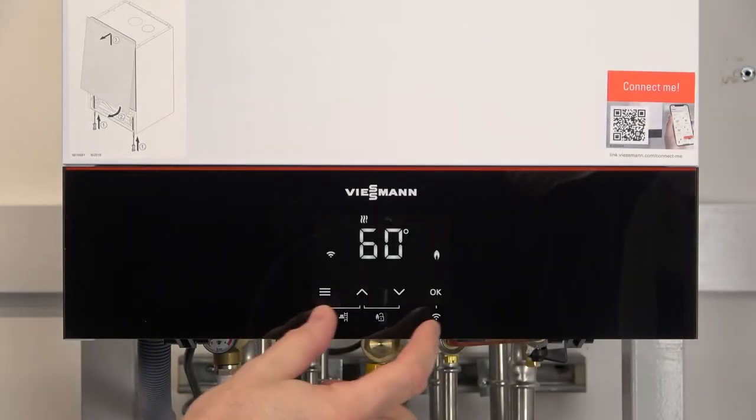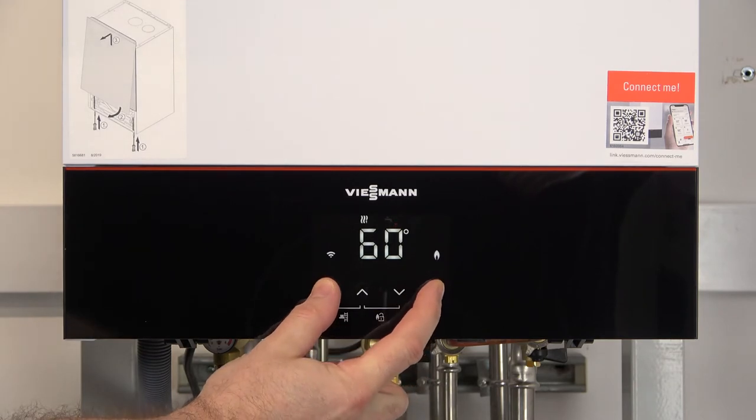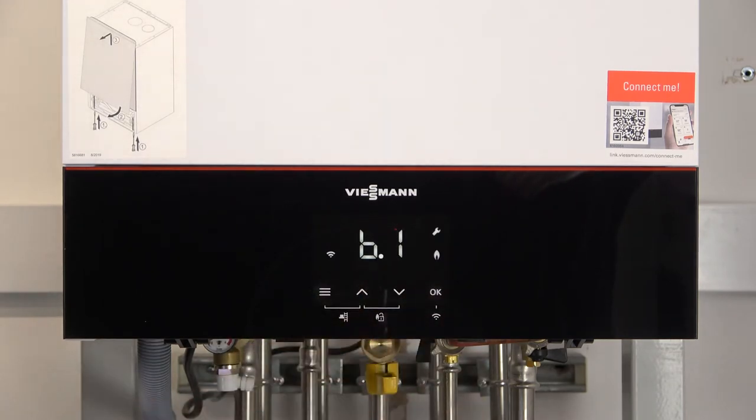To access the B menu we press and hold the menu and OK button for 4 seconds. Again, all this information can be found in the manufacturing instructions.